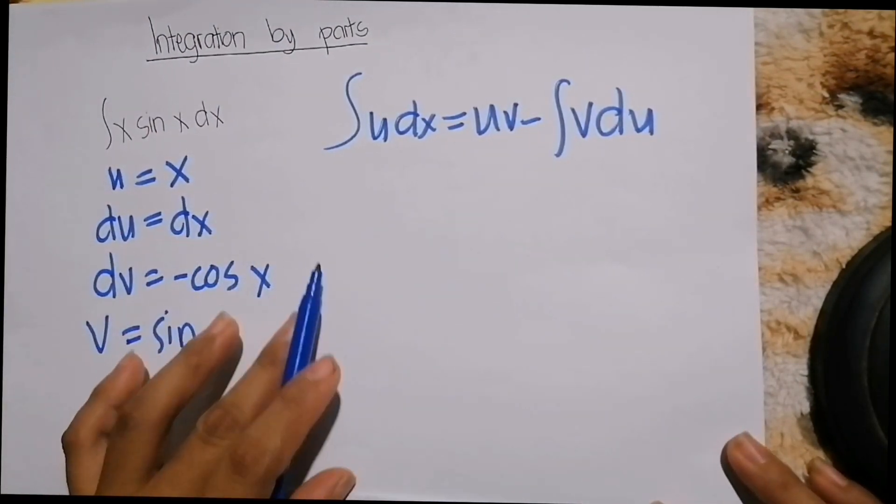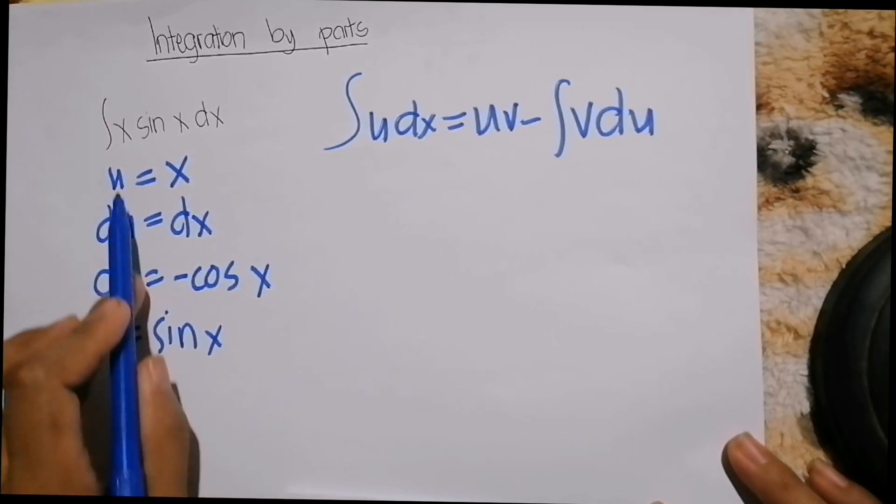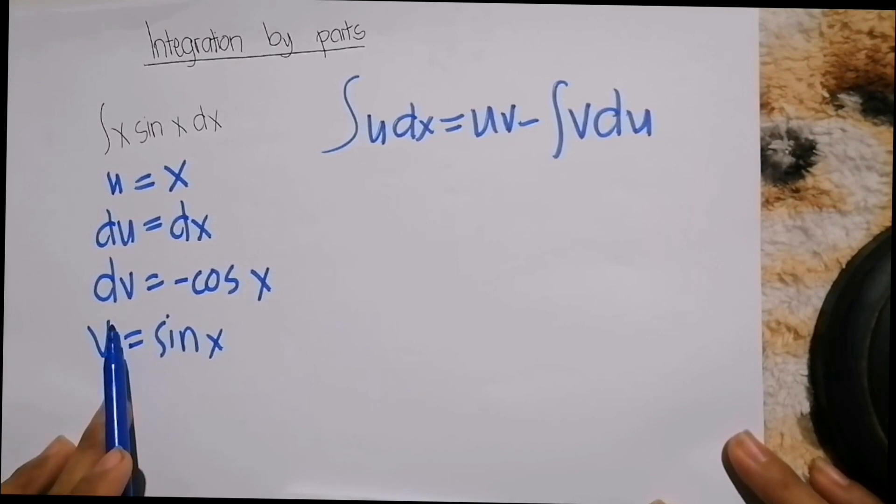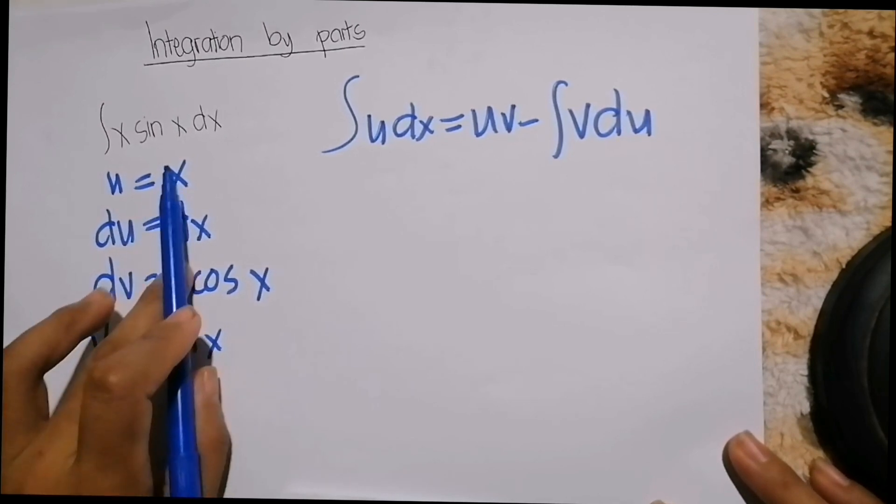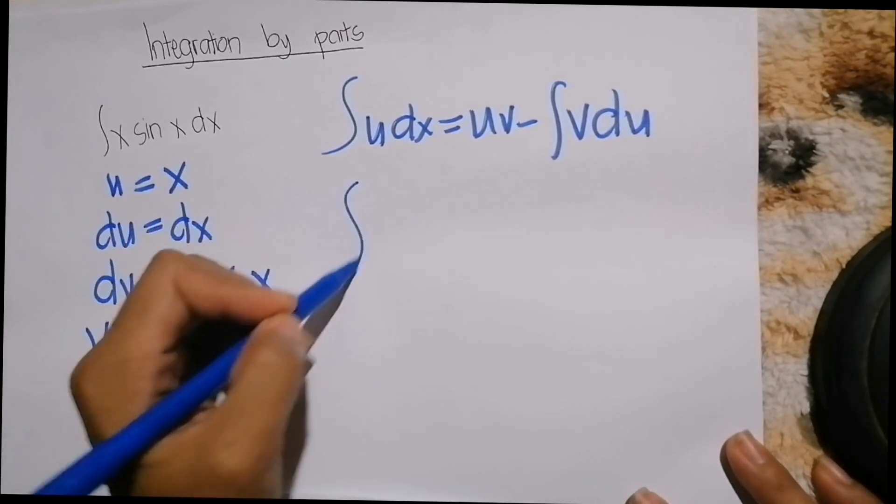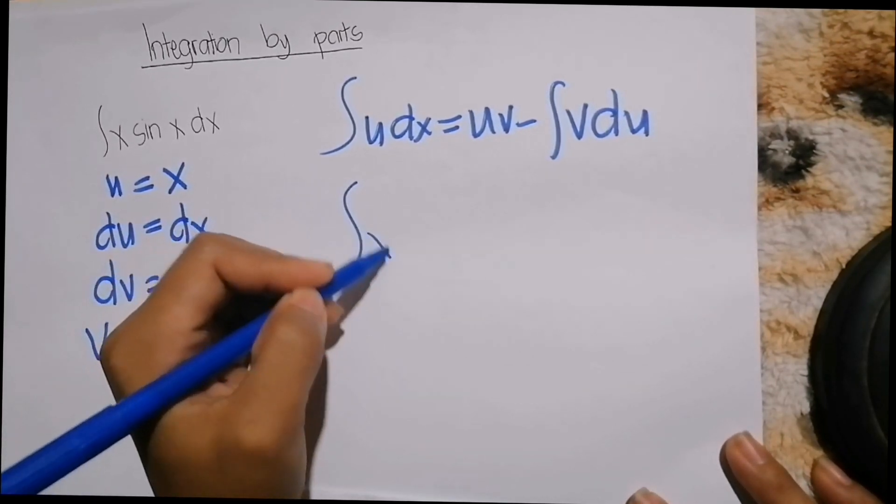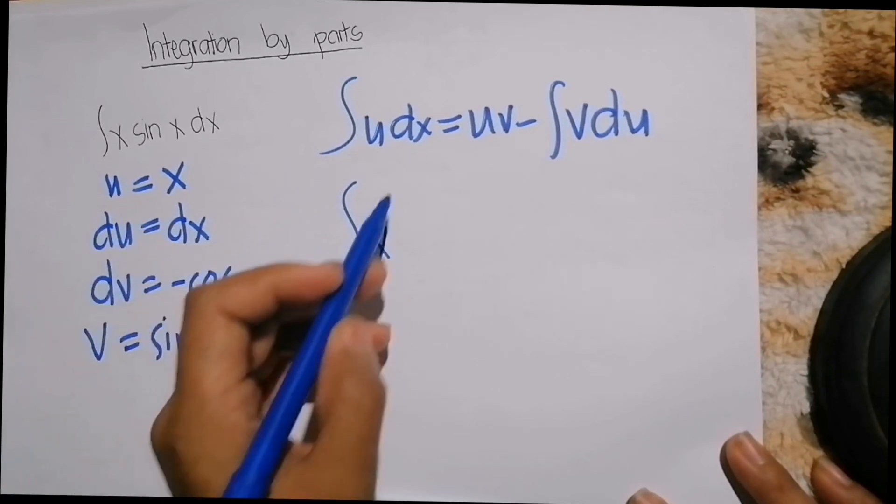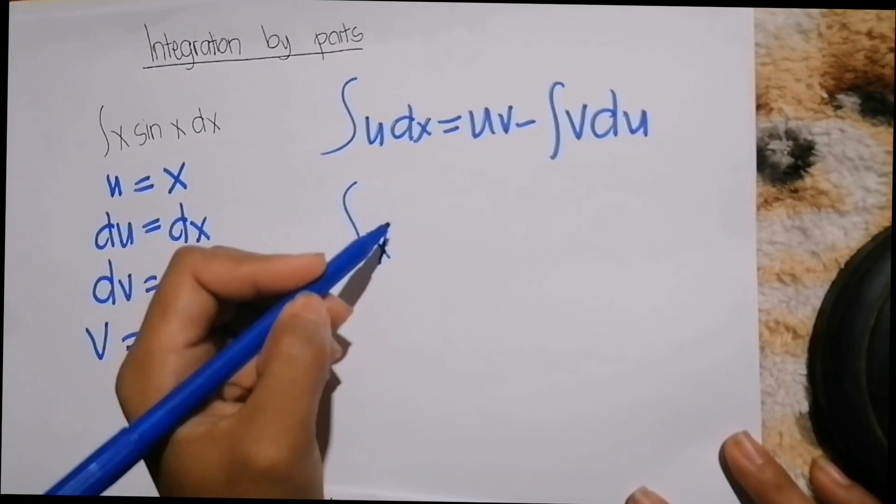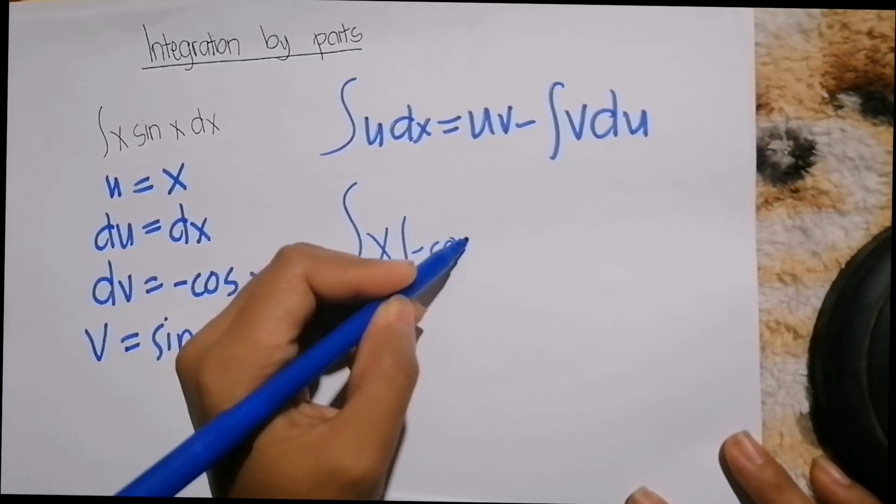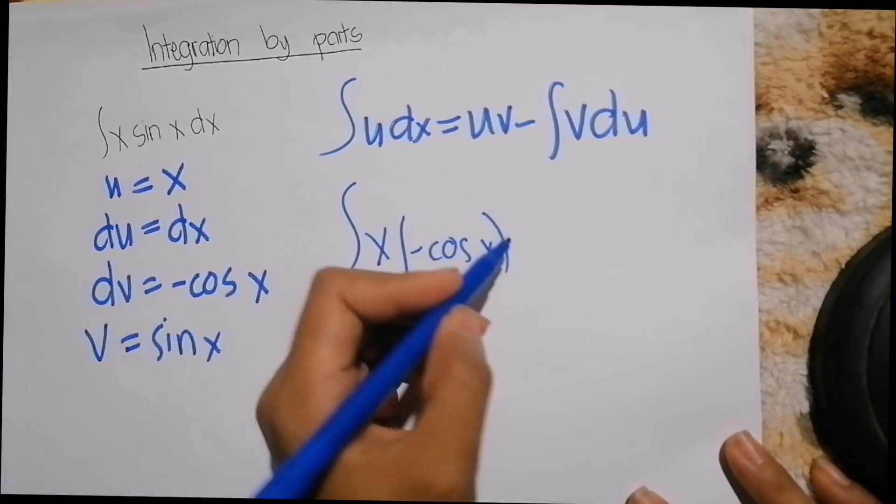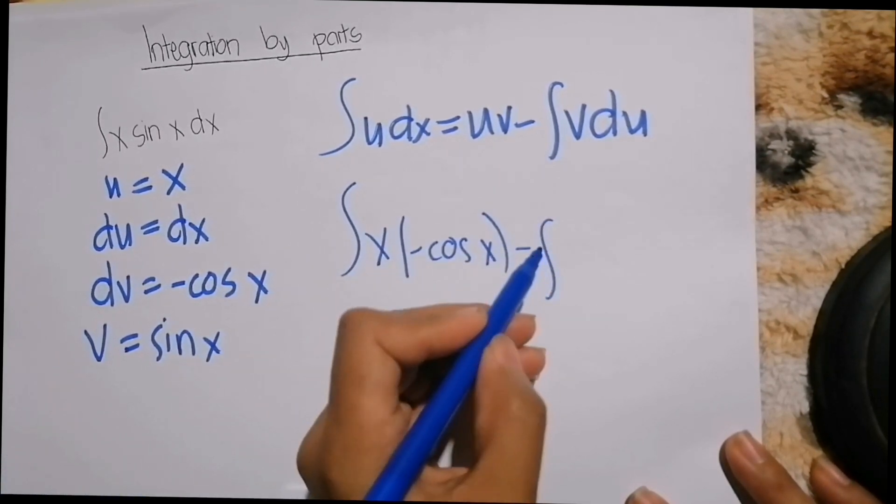So we will substitute our values. This will be the integral of x, our dx, is negative cosine x minus the integral of...